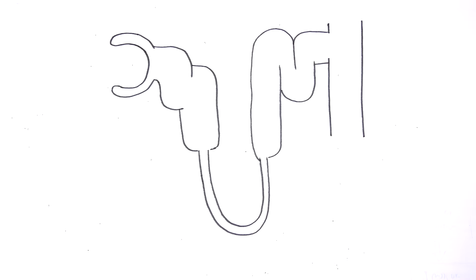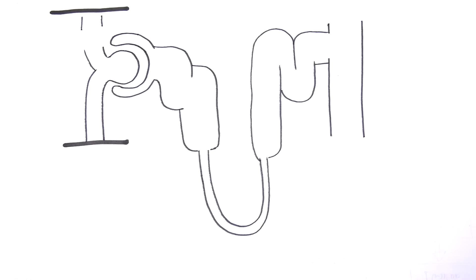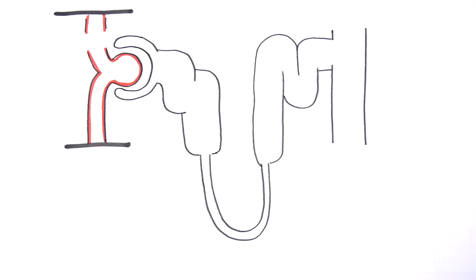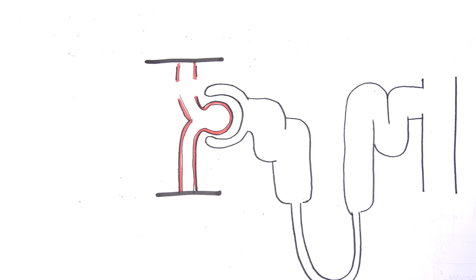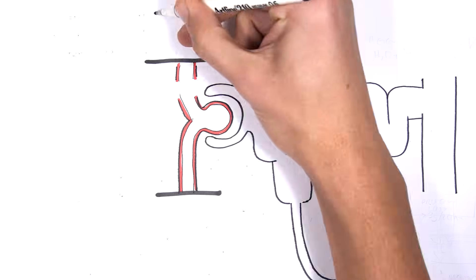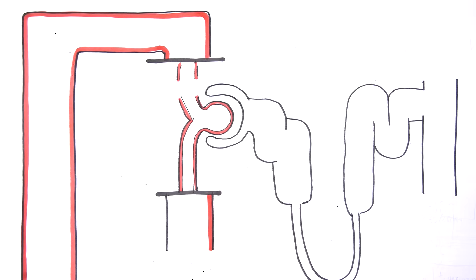Here is a nephron, the functional unit of the kidney. The afferent arteriole comes into the head of the nephron and forms the glomerulus. Coming out is the efferent arteriole which eventually joins with other efferent arterioles to form the renal vein, which enters circulation once again.